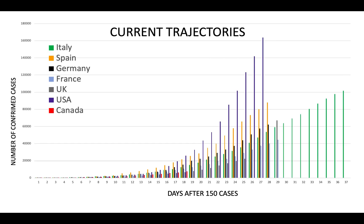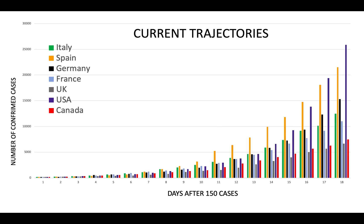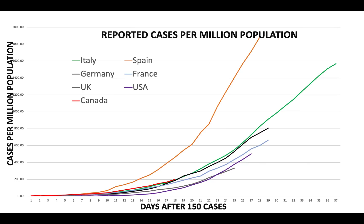Current trajectories are as follows. The United States is still growing exponentially. If we zoom in on Canada, we are still growing day by day. Looking at reported cases per million, you can see Canada has flattened out and is now really hovering around where Germany and Italy are.